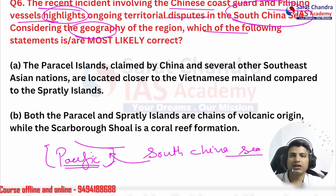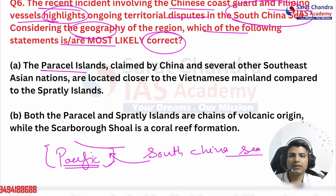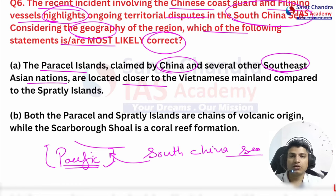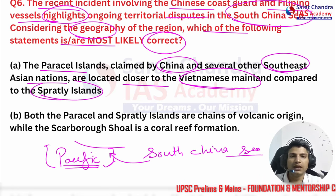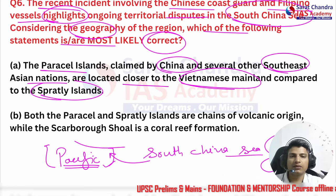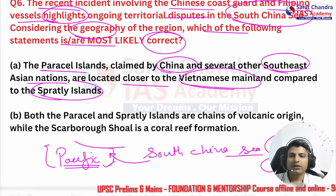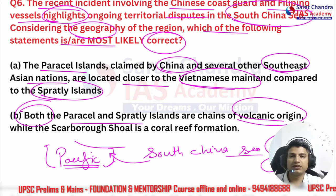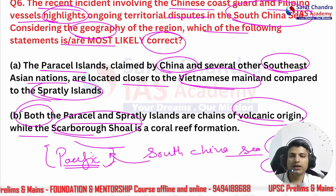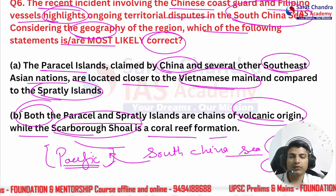Considering the geography of the region, which of the following statements are likely correct? Statement one: the Paracel Islands, claimed by China and several other Southeast Asian nations, are located closer to the Vietnamese mainland compared to the Spratly Islands. Statement two: both the Paracel and Spratly Islands are chains of volcanic origin, while the Scarborough Shoal is a coral reef formation.